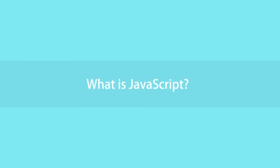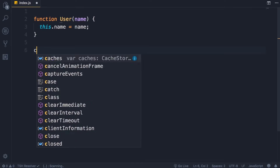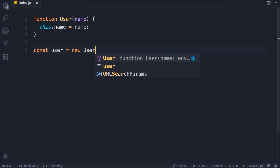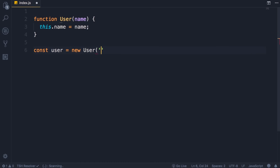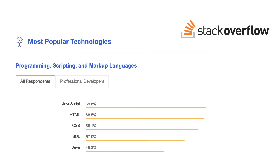JavaScript is one of the most popular and widely used programming languages in the world right now. It's growing faster than any other programming language, and big companies like Netflix, Walmart, and PayPal build internal applications around JavaScript.